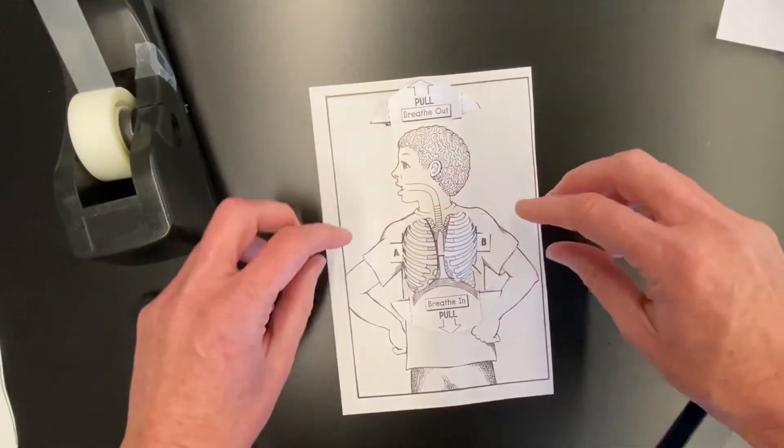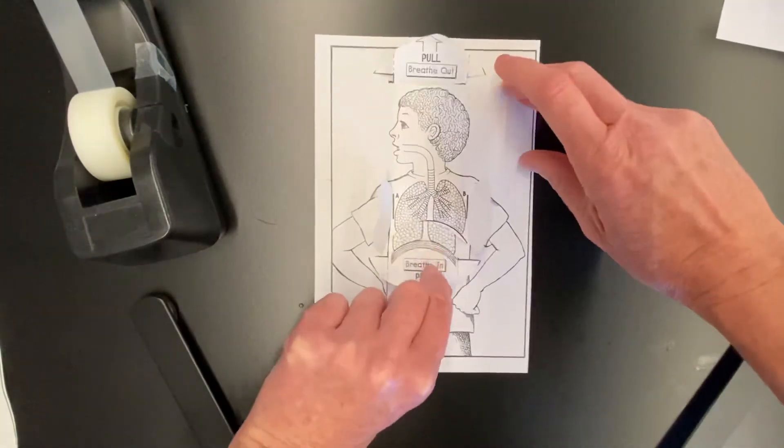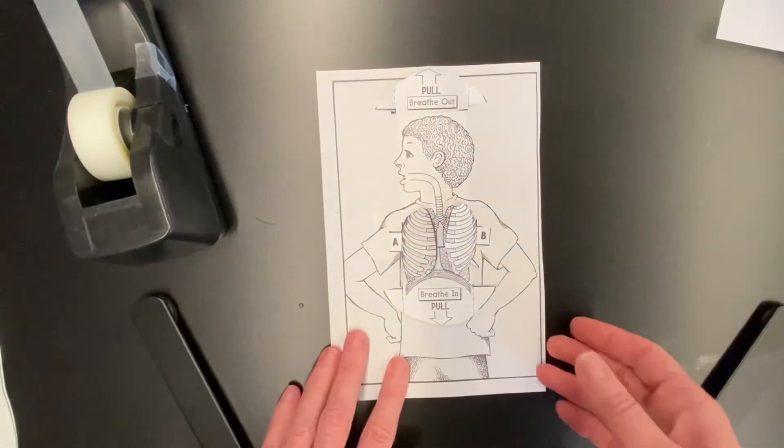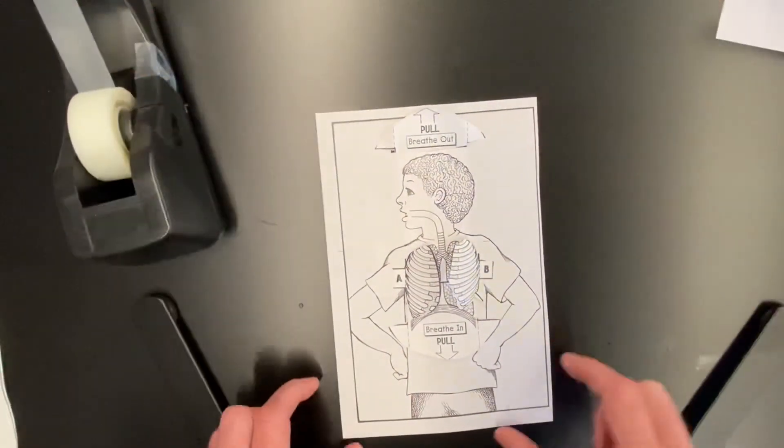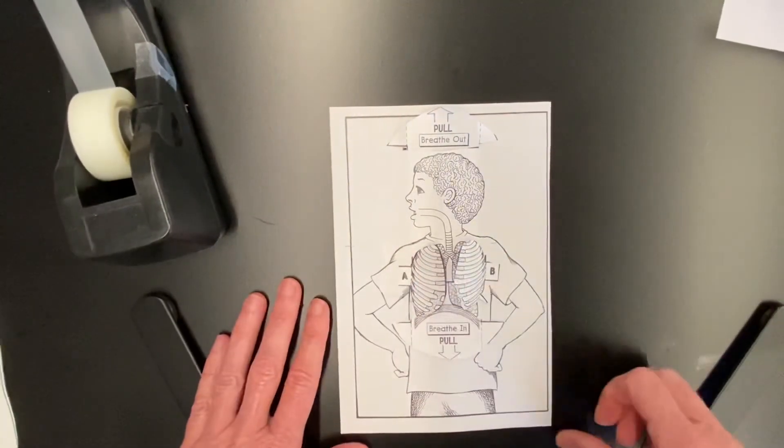Then I can open up my lungs and see how my breathing works. The last thing would be to put this into your science notebook. You can just tape down the four corners. And if we have time, you can even add some color.